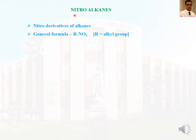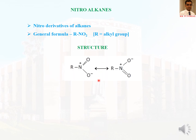We will start with nitroalkanes. Nitroalkanes are nitro derivatives of alkanes. Their general formula is R-NO2, where R is the alkyl group. When we come to the structure, it is very clear that nitroalkanes can be represented by the resonance hybrid of two canonical structures.